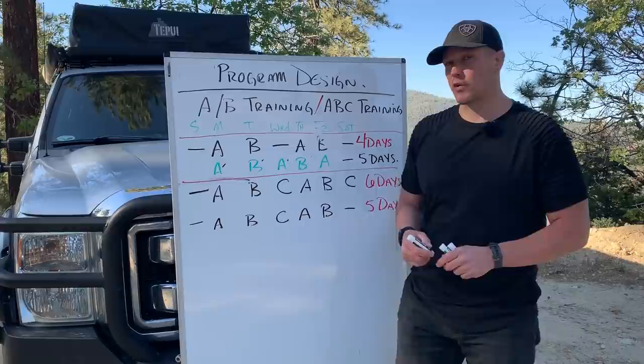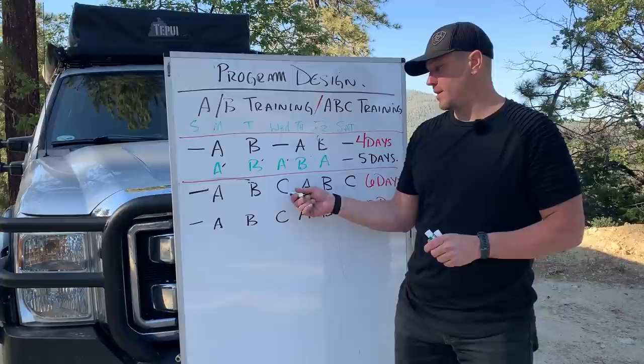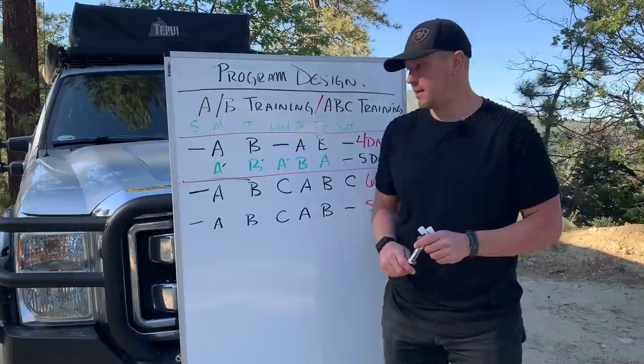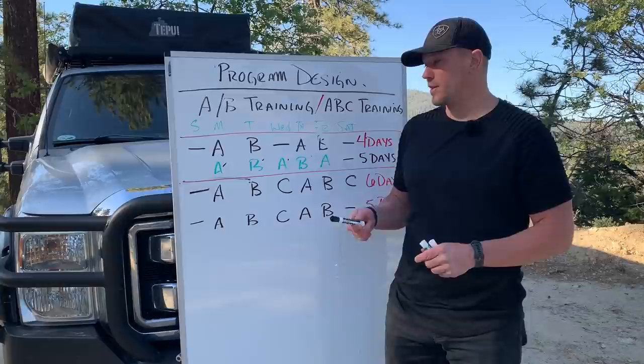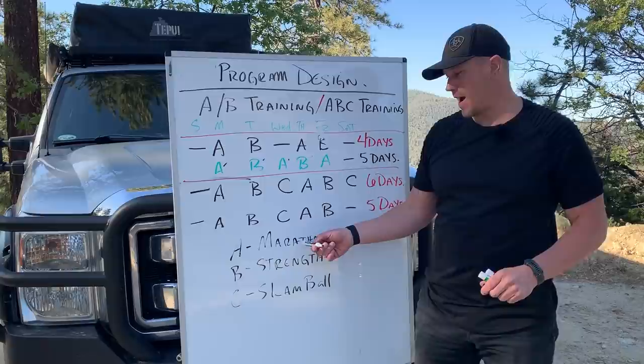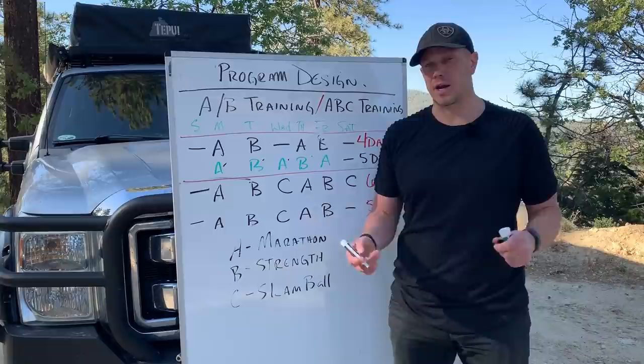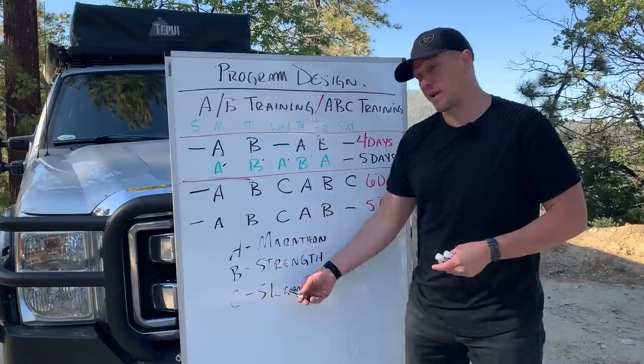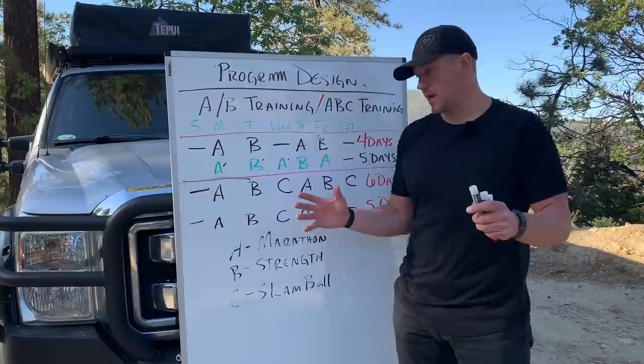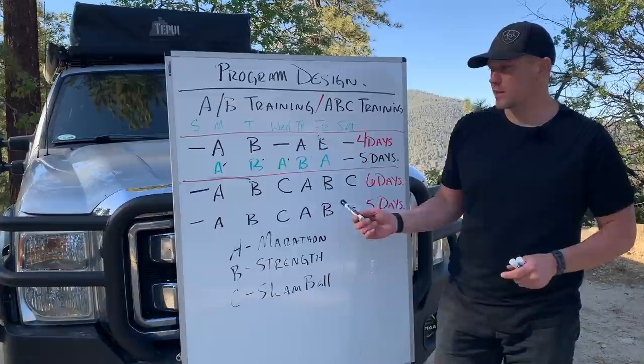An ABC program allows you to run three ideas at once. What I'm currently running in my ABC program is kettlebell marathon, strength day, and a slam ball program. This keeps you out of overtraining because all of these things are running on their own program. My A program — marathon — has its own heavy-light progression. My B program — strength training — has its own separate progression. My C program — slam ball — has 10 levels and its own progression. This is a way to distribute the training and keep you from overtraining.